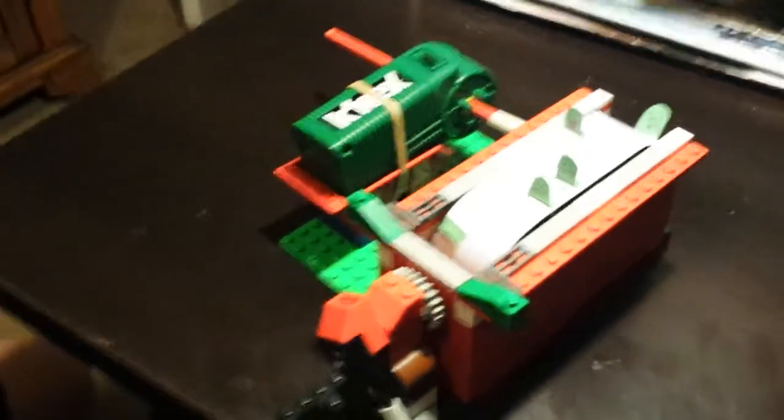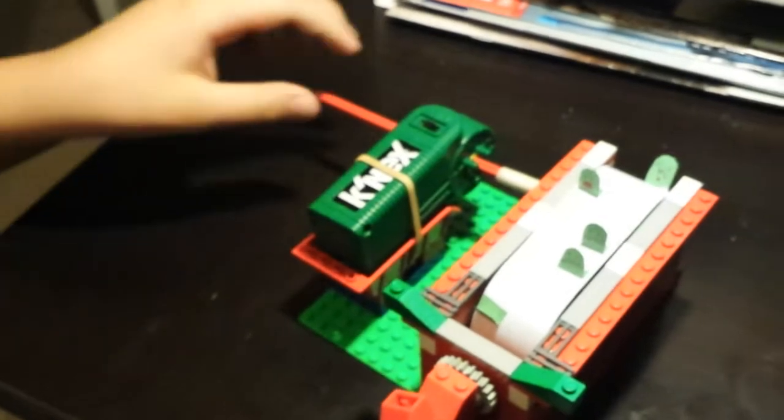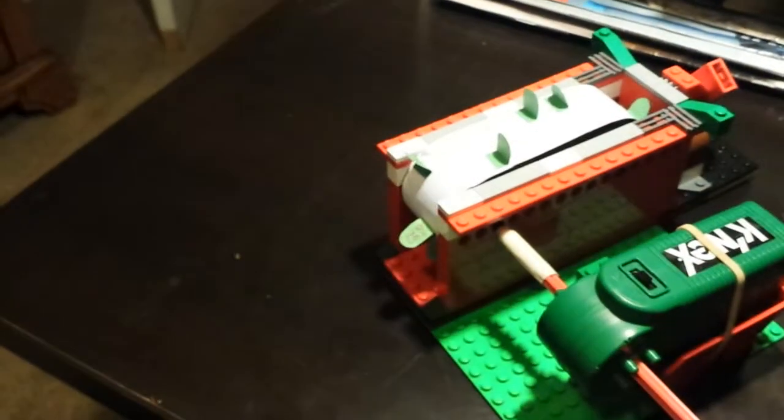Okay, so there are two tires inside here under this paper that this rod from the tires is taped to with the K'nex motor.